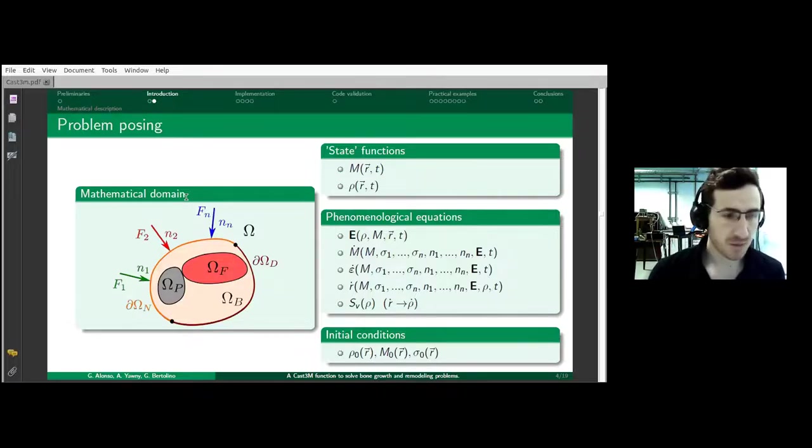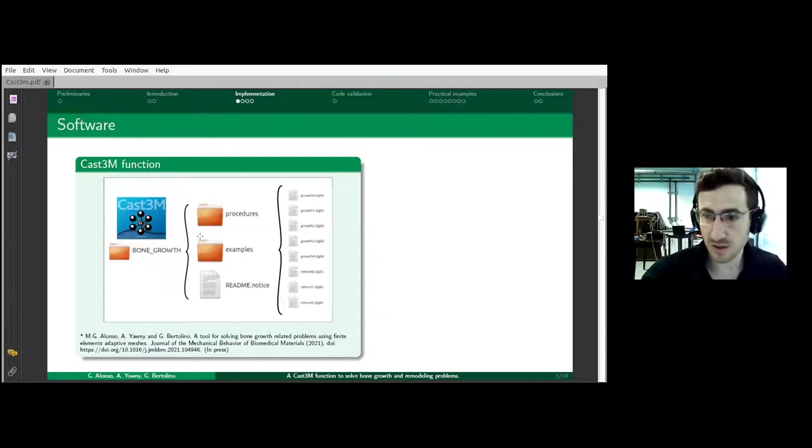What we found is that although there is quite a bunch of literature on this topic, authors tend to publish results but not validated code we could trust to perform these calculations. For this reason, we chose CAST3M and implemented a new algorithm for solving these problems. We published the function and all the validation cases and examples.